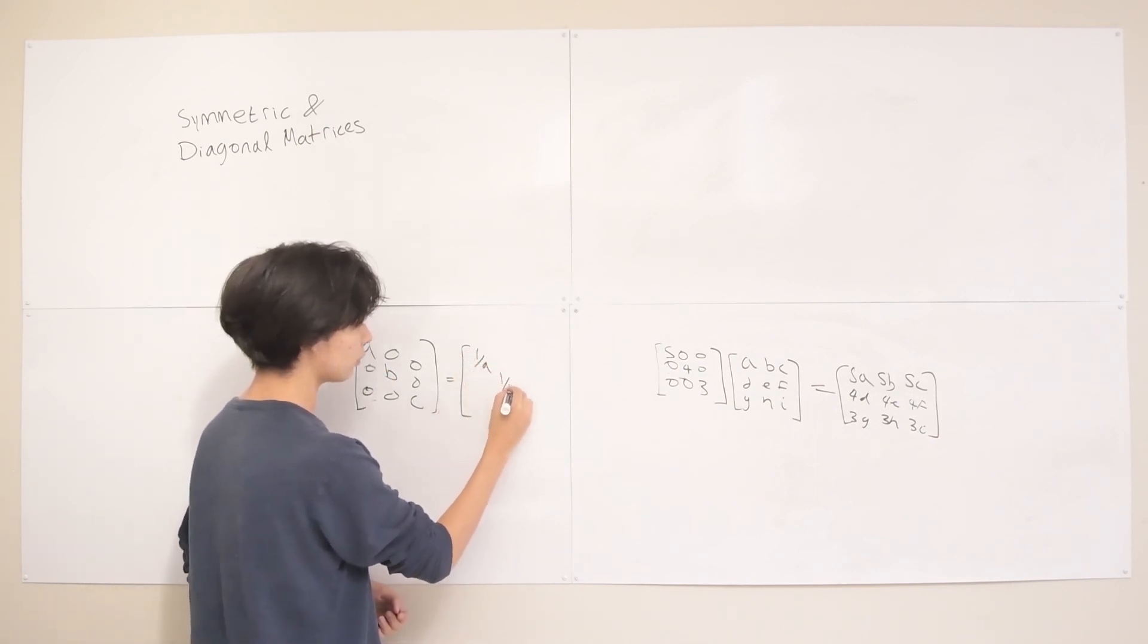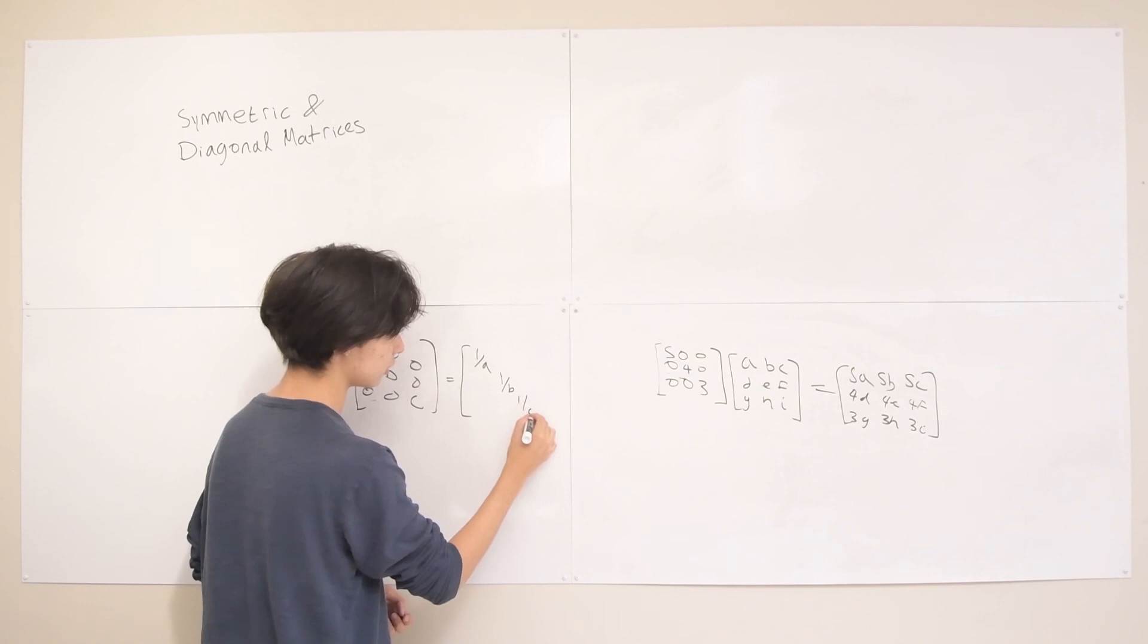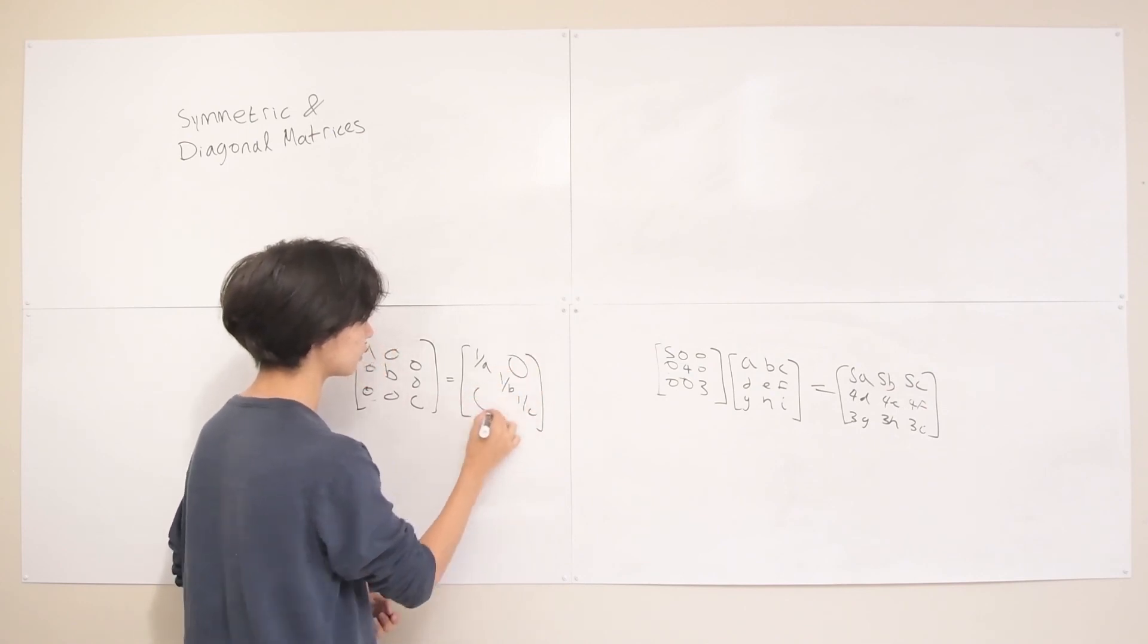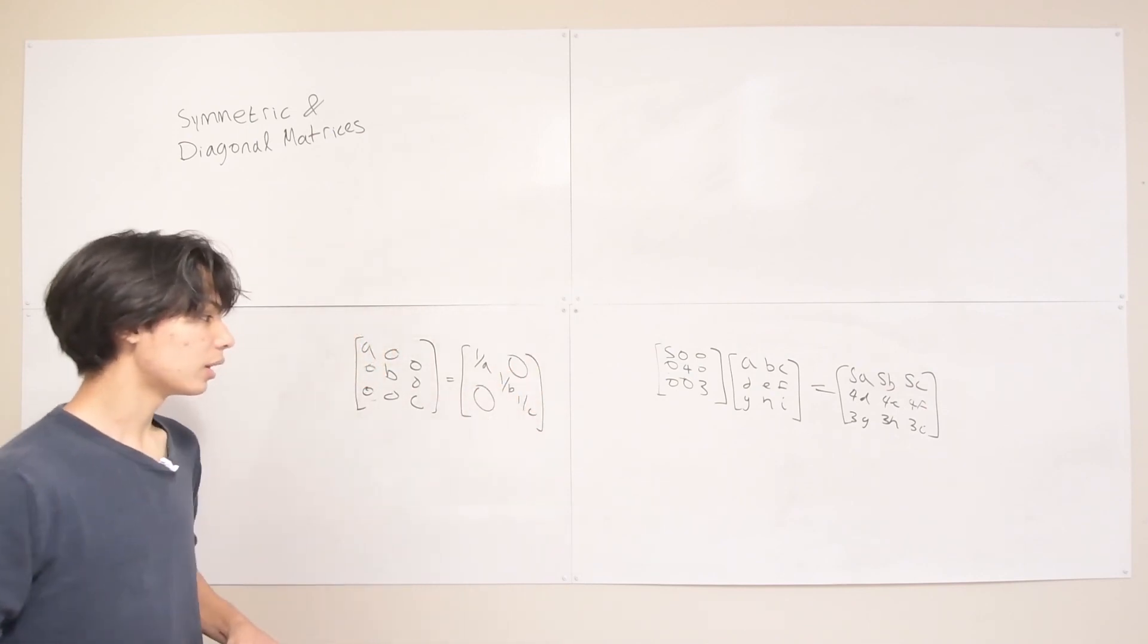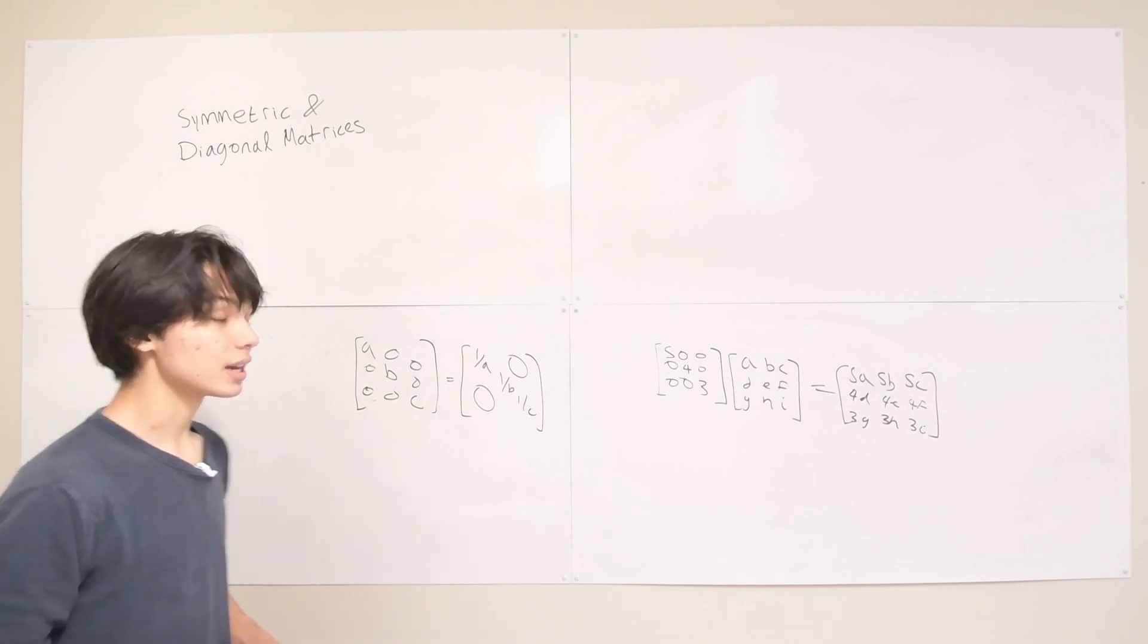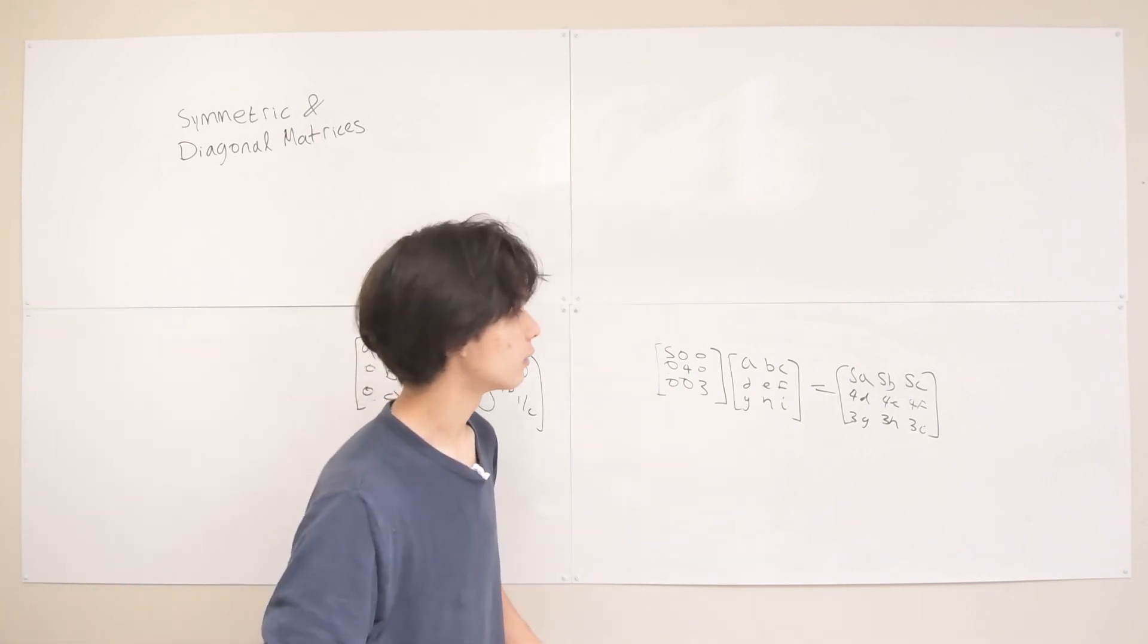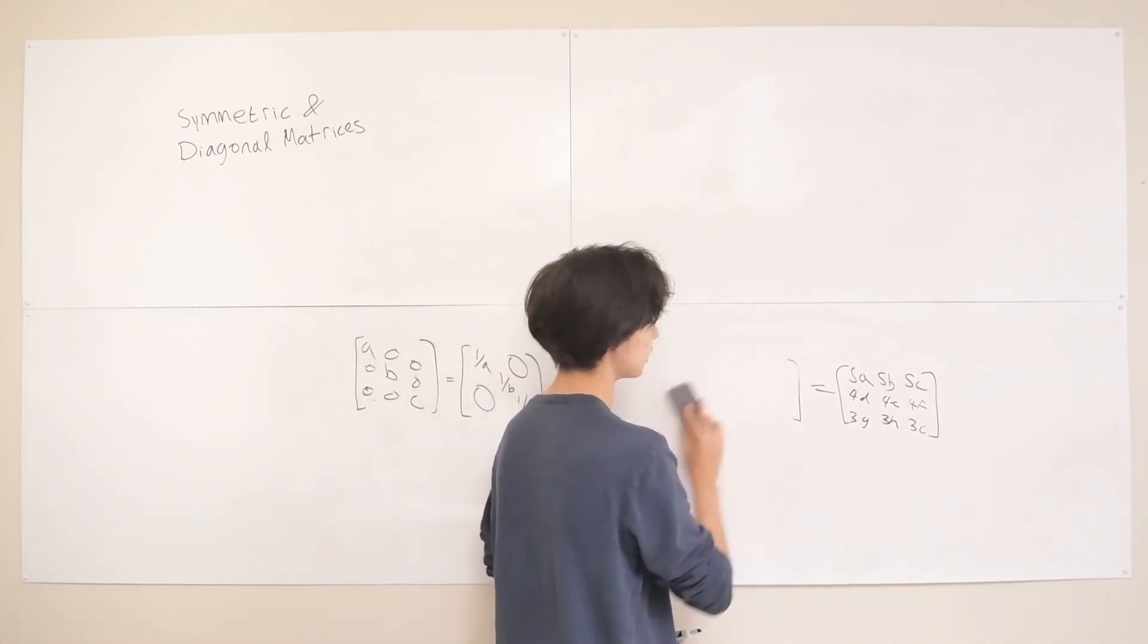So 1 over A, 1 over B, 1 over C, and then 0s everywhere else. And that's just kind of the general easy way to find the inverses of a diagonal matrix. And usually it's very hard to find inverses of matrices. So it's nice when it's nice like that.